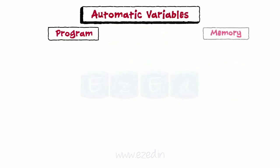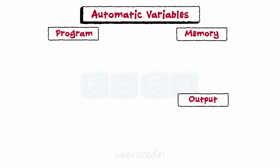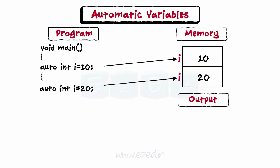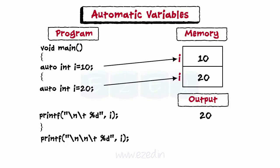Let's analyze a program to demonstrate the use of automatic storage class. Within the main function, the first line declares i as an integer variable of type auto and assigns it 10, so it is allotted a memory location in the main memory. Again, another i is declared as auto and assigned 20, allotted a memory location in main memory. As i is declared in that inner block, its scope is limited to that block only, so its value is 20 there. The first i declared in main has scope for the entire function, so its value is 10.